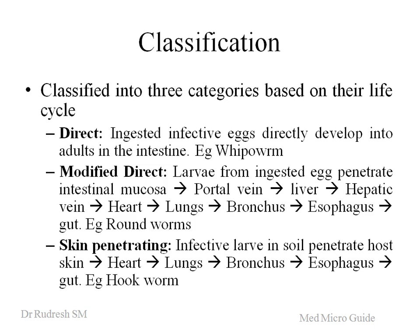In the modified direct life cycle, the larvae are ingested and they will penetrate the intestinal mucosa. They will go to the portal venous circulation, then to the liver. Through the hepatic vein they will reach the right part of the heart, and from there they will go to the lungs. In the lungs they mature, burst open through the capillaries, move through the bronchus, reach the throat, and are swallowed again. They pass through the esophagus and reach the gut where they mature to form adult worms. The example is roundworm.